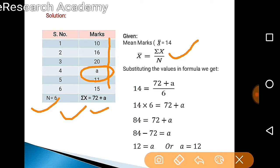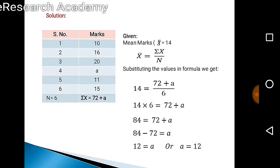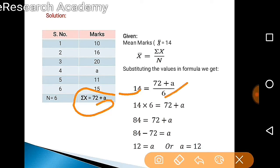Sigma x here is 72 plus a, n is 6, and we are given mean marks are 14. Now substitute these all in this formula. We get 14 equals 72 plus a divided by 6.